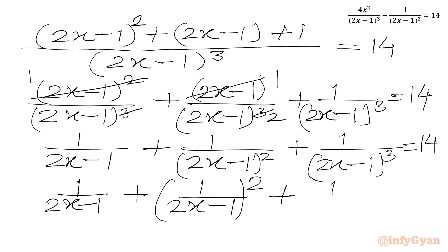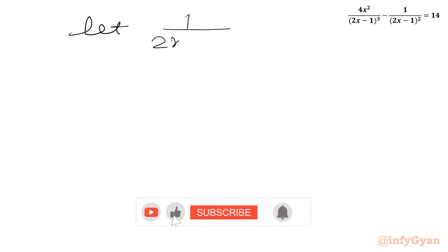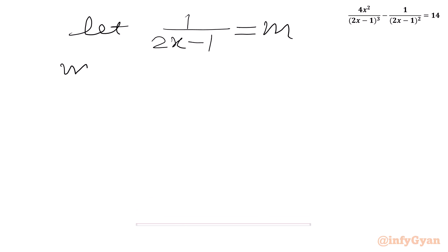I can write 1/(2x - 1) plus 1/(2x - 1)² plus 1/(2x - 1)³ equal to 14. Now I will use substitution. Let 1 over (2x - 1) equal to m. So our equation becomes m + m² + m³ equal to 14.